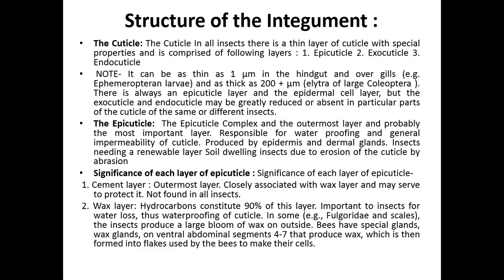The epicuticle is the outermost layer — a complex and probably the most important layer, responsible for waterproofing and general impermeability of the cuticle. It is produced by the epidermis and dermal glands. Some insects, particularly soil-dwelling insects, need a renewable layer due to erosion of the cuticle by abrasion.